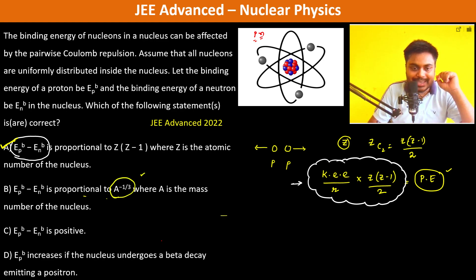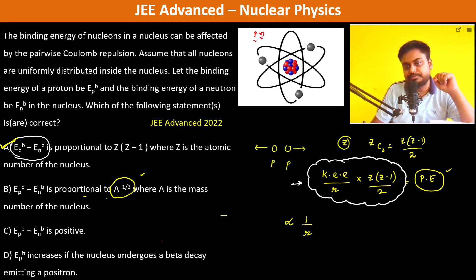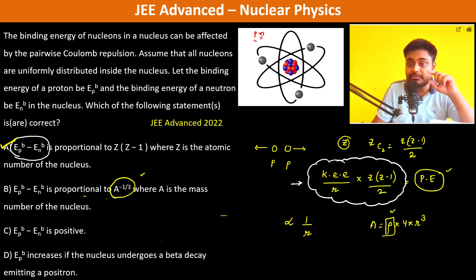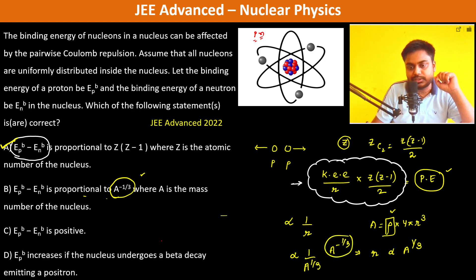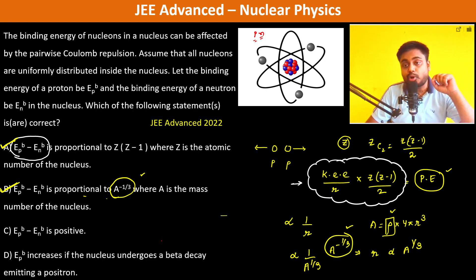Option B states it is proportional to A to the power minus 1/3, where A is the mass number. The difference is inversely proportional to r. For a nucleus, the nuclear density is constant for all nuclei, so from (4/3)π r³, we get r proportional to A^(1/3), meaning the energy is proportional to A^(-1/3). So option B is also correct.